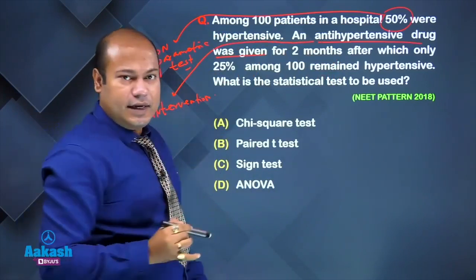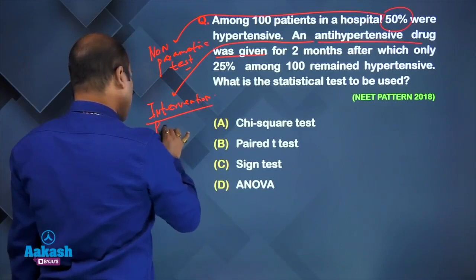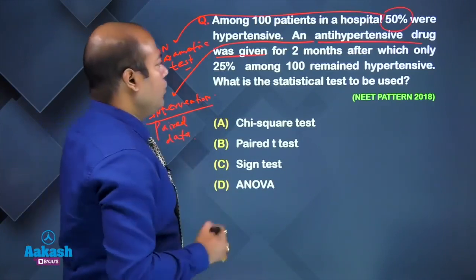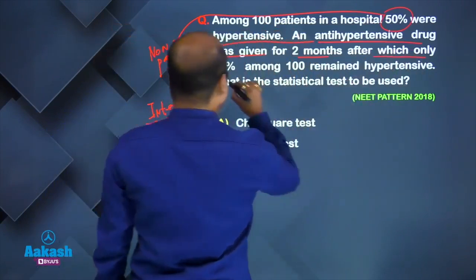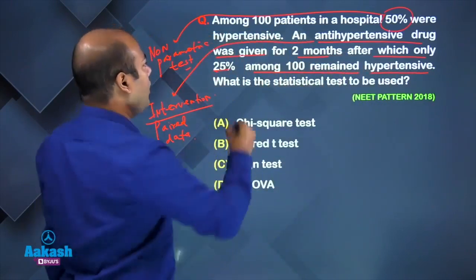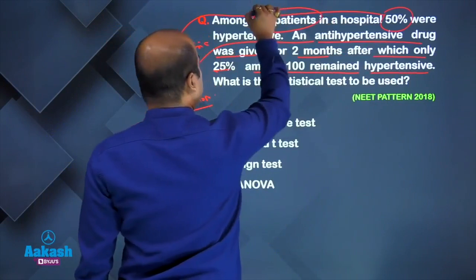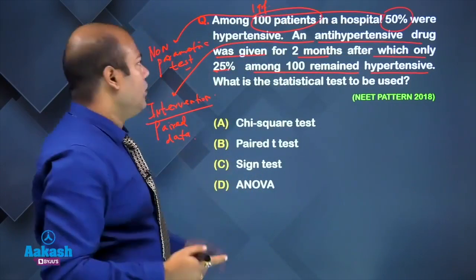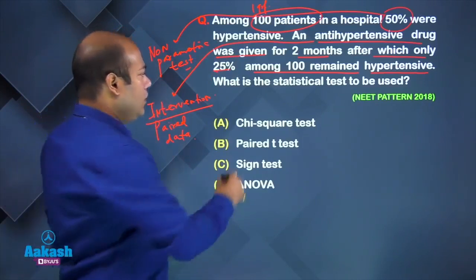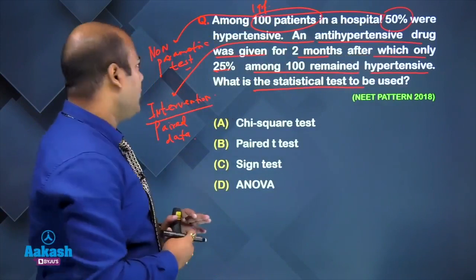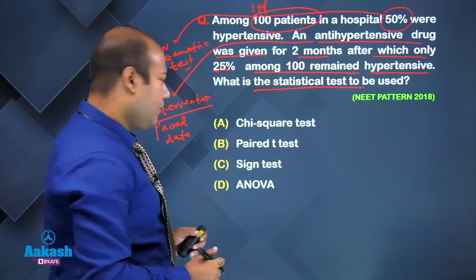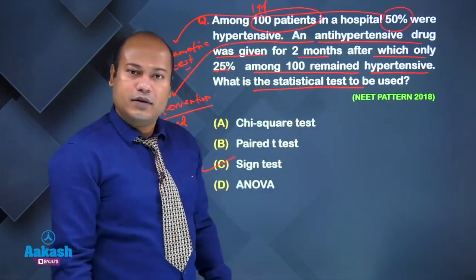Whenever there is intervention, it is paired data. The drug was given for two months after which only 25% among 100 remained hypertensive. One group, paired data, non-parametric test — what statistical test should be used? One group, paired data, non-parametric: the answer is the sign test.